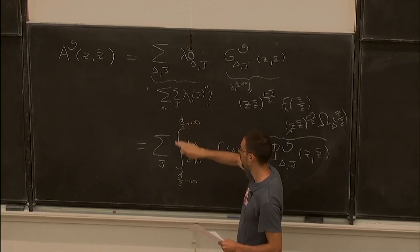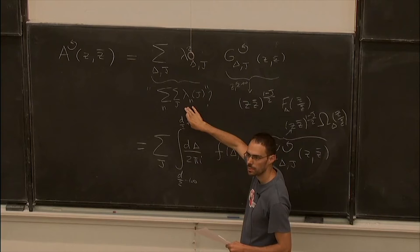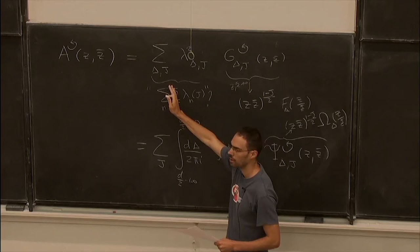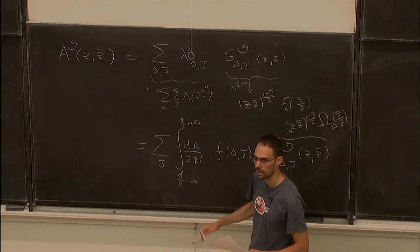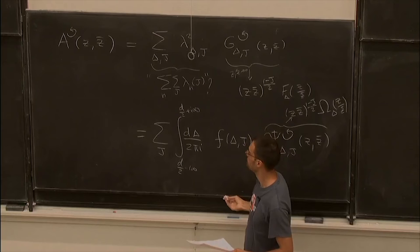From the answer we get here, it's clear this is not the right way to do it, because if you take the Regge limit for each trajectory separately, it will be different from the full four-point function. So you really have to do everything at the same time.